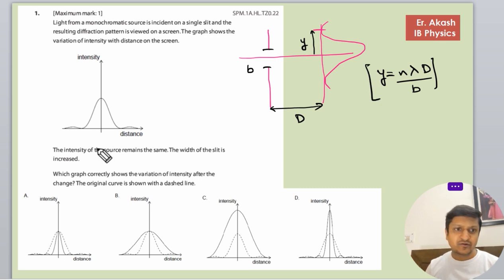So according to this question, if the slit is increased, it means b is increased and when b will increase, the y will decrease. So when y will decrease it means the new y will come here and the new graph will be narrower. And if the slit will be increased, the intensity will also increase. So intensity will also come to this level. So the graph will be like this.